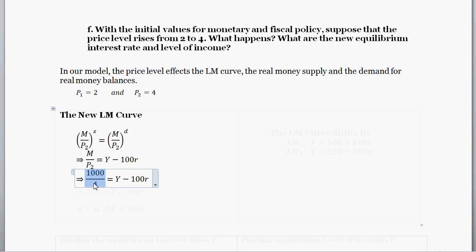So plugging that in, money balances was 1000 that we were told. Price level is just 4 equal to output minus 100 times the interest rate. So now we're going to rearrange that term to get our new LM curve equation. This is our new LM curve equation. The LM curve takes the form of Y is equal to something in terms of R. So Y is equal to 250 plus 100R.